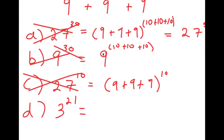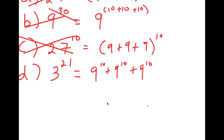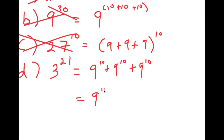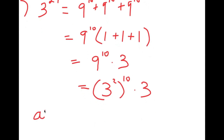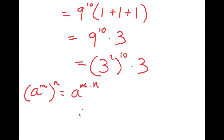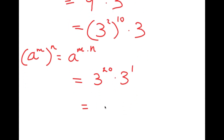Now 3 to the power of 21, which by process of elimination is the right answer — let's see how we get this. We start with 9 to the power of 10 plus 9 to the power of 10 plus 9 to the power of 10, and factor out 9 to the power of 10. So I get 9 to the power of 10 times 1 plus 1 plus 1, which equals 9 to the power of 10 times 3. This equals 3 squared to the power of 10 times 3, which is 3 to the power of 20 times 3 to the power of 1. Adding the exponents gives 3 to the power of 21.